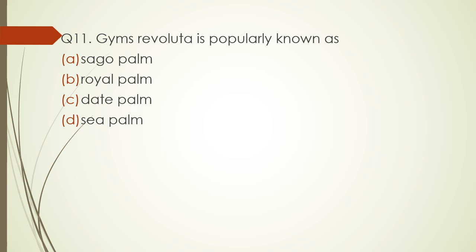Question number eleven. Cycas Revoluta is popularly known as: Sago palm, Royal palm, Date palm, or Sea palm? The correct answer is option A — Sago palm.